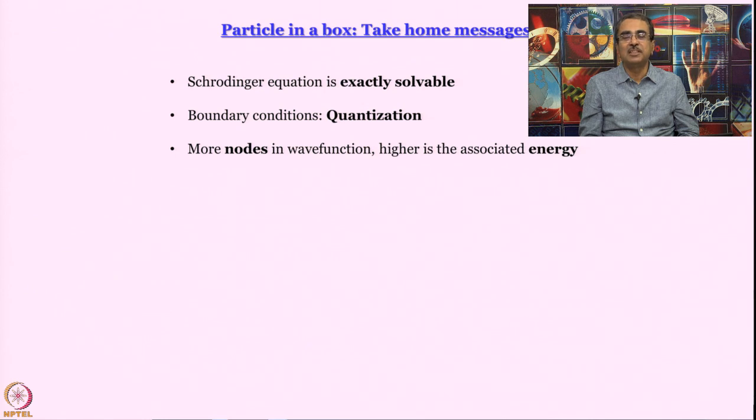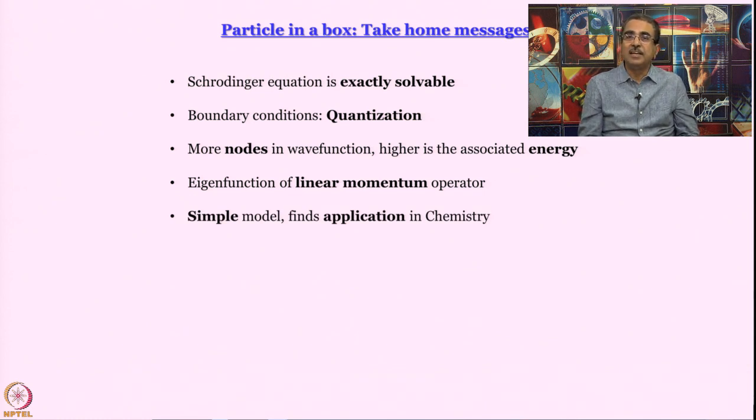Remember Schrodinger equation is a perfectly classical equation for de Broglie waves. But there was no quantum number there. Quantum numbers arise when we use Born interpretation and apply boundary conditions. One thing that we have seen is that if you have more nodes in wave function, higher is the associated energy. This is an important thumb rule that we use often in chemistry. We learned about eigenfunction of linear momentum operators. Is this wave function of particle in a box an eigenfunction of linear momentum operator? No, it is not. But we showed that we can express it as sums of two eigenfunctions of linear momentum operator.